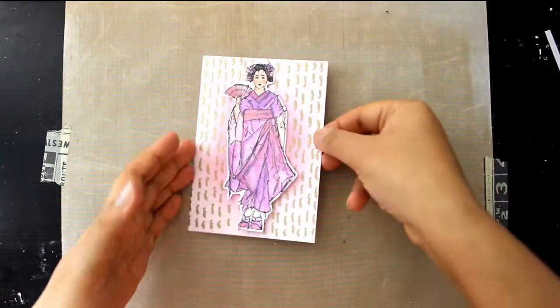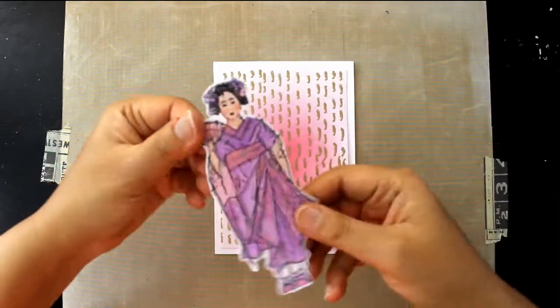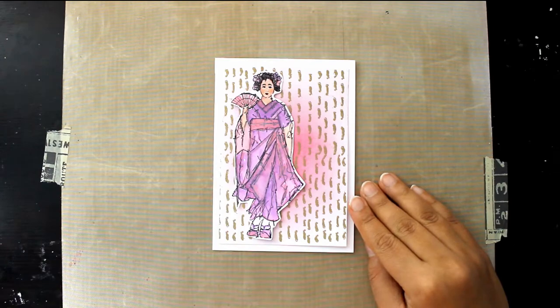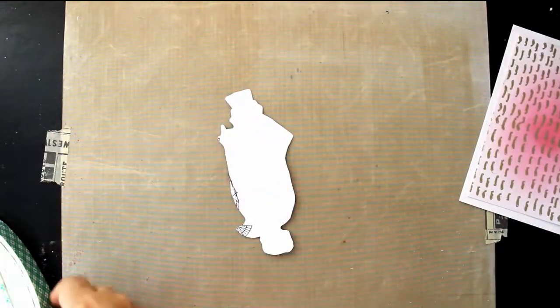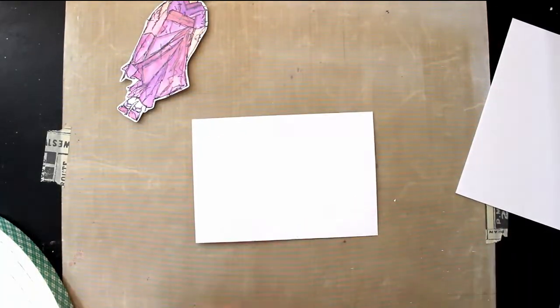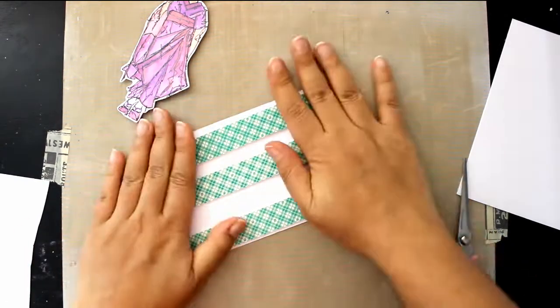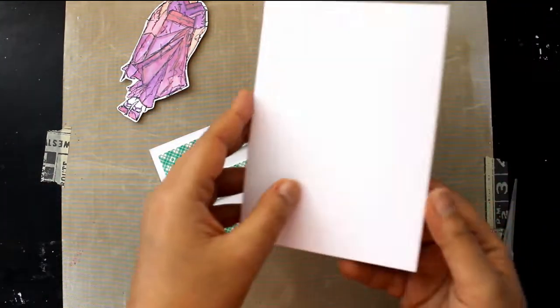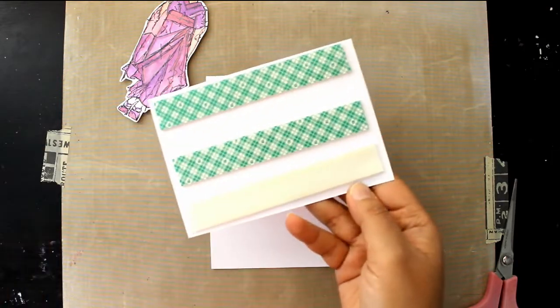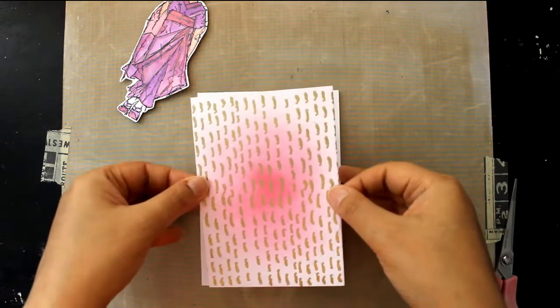I am just layering her on my embossed and inked card panel, just seeing how she looks. Then I decided to put her a little bit offset to the side. I have put down some foam tape on the back. This is something I love doing on cards because I think just adding that dimension gives it that really nice finished look. I have got a top folding card and I am going to peel off the backing of my foam tape and stick it down to my top folding card.